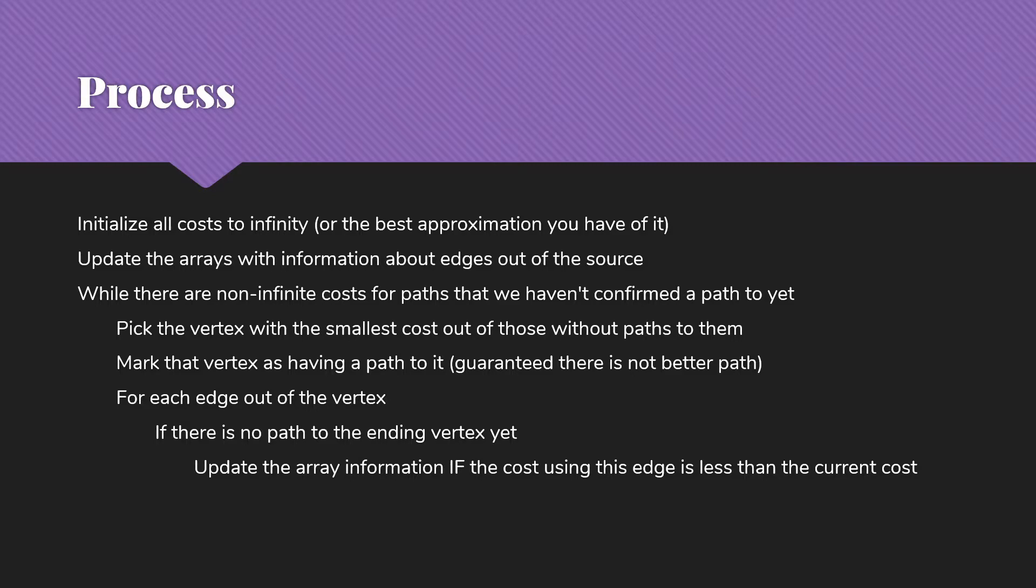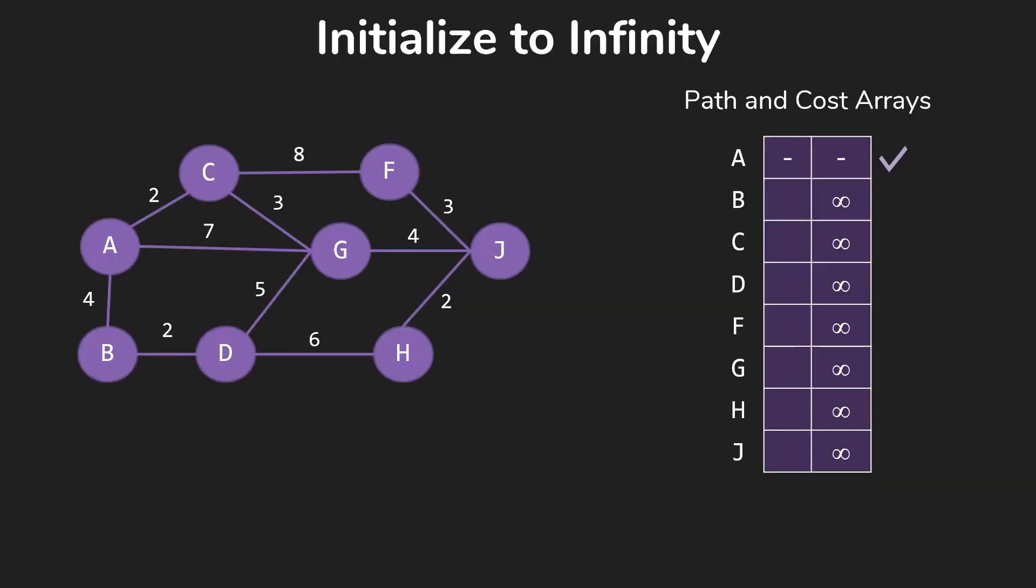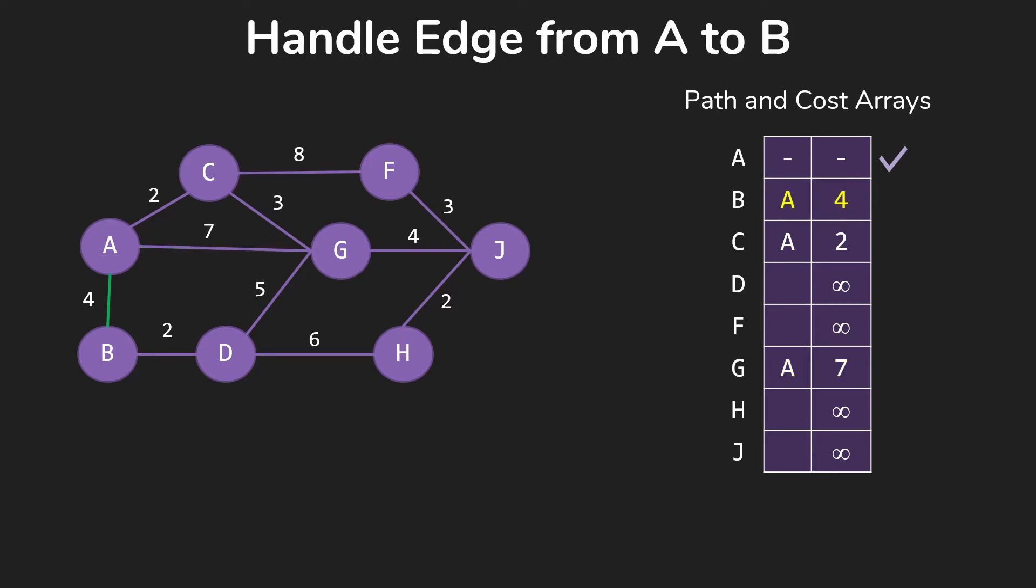So let's go through our example. We start out by simply taking all of our costs and setting them to infinity, except for our source, where we're not going to be concerned about a path to our source. Then we're going to go through the edges out of our source, which in this case, we're again doing A. So we have an edge from A to C, so we're going to mark that we can get to C from A for 2. We have the edge from A to G, so we mark that we get from A to G for 7, and the same with B from A for 4.